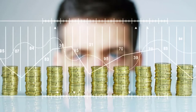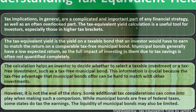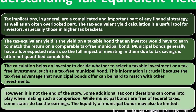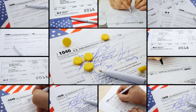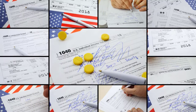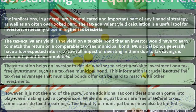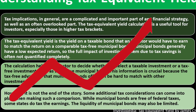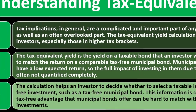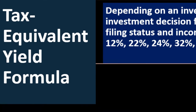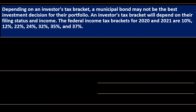However, it is not the end of the story. Some additional tax considerations can come into play when making such a comparison. While municipal bonds are free of federal taxes, some states do tax the earnings. It's not always straightforward — we might have multiple taxes imposed depending on the state. Federal tax is probably the bigger obligation we think of first, but state tax obligations could also be significant, especially in high-tax states. The liquidity of municipal bonds may also be limited.